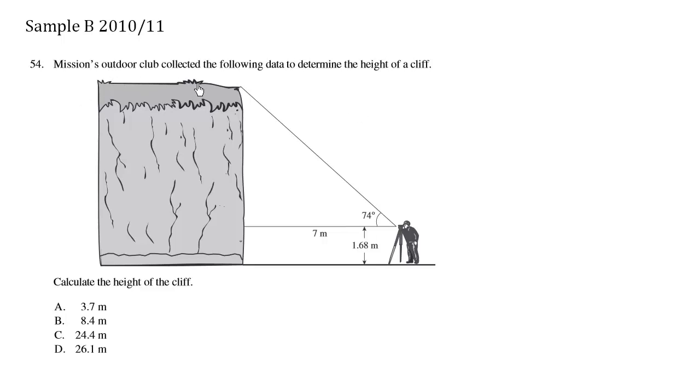Mission's Outdoor Club collected the following data to determine the height of a cliff. We have a right triangle here and we're given some information: an adjacent side, an angle, and a little height. Calculate the height of the cliff. The key here is to find the total height.